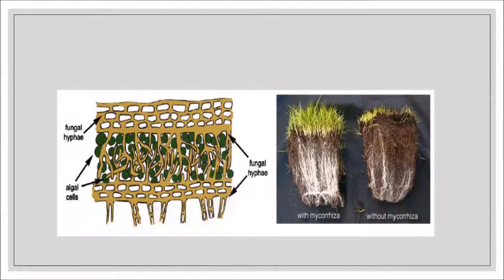Because of chemicals present in them, mycorrhizal fungi help in food production. You can see in the image how the plant differs with and without mycorrhiza. Symbionts are helpful — not like parasites — and they maintain a mutual relationship.